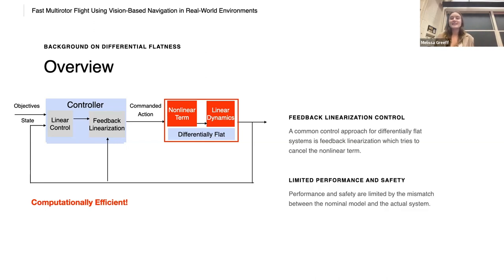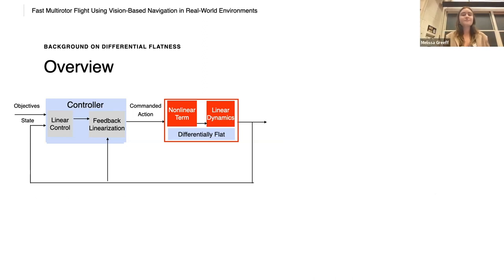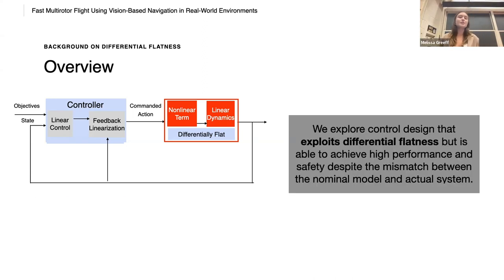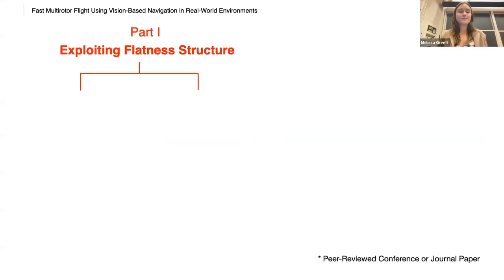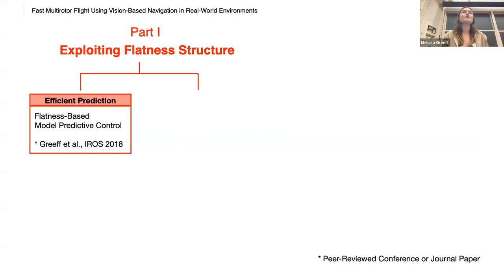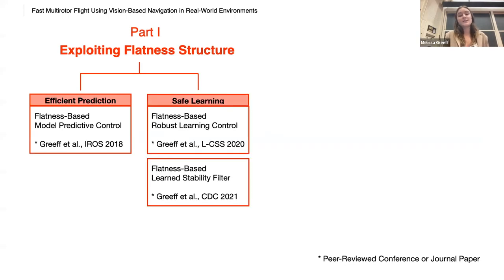However, in reality, performance and safety are limited by the mismatch between the actual system and the nominal model. And so we explored control design that exploits differential flatness, but is able to achieve high performance and safety despite the mismatch between the nominal model and the actual system. In the first part of this thesis, I investigated some of the ways that exploiting flatness structure can be used for efficient prediction and safe learning.